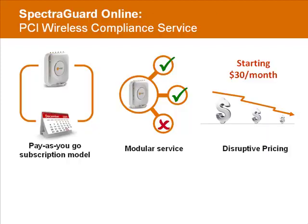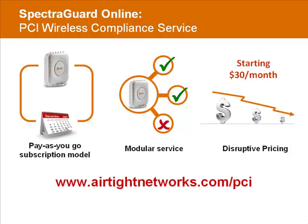SpectraGuard Online is available in the pay-as-you-go subscription model. SpectraGuard's modular services architecture allows you to purchase the capabilities you need to meet your data security requirements, with pricing starting as little as $30 per month. For more information on Airtight SpectraGuard Online, please visit www.AirtightNetworks.com/PCI.